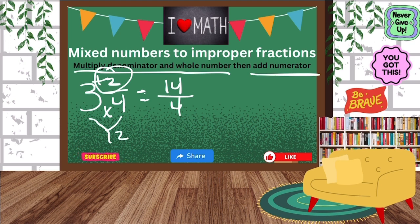I hope that this makes a lot of sense. Remember, multiply the denominator and the whole number. Whatever answer you get, you add the numerator and then your denominator stays the same. I hope that this is easy for you guys. I know this can be a little confusing, but if you just follow the steps, I think you'll be fine.